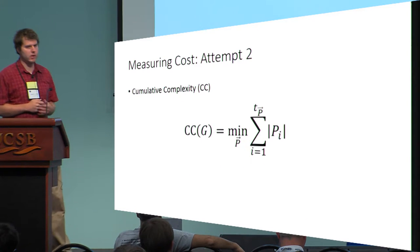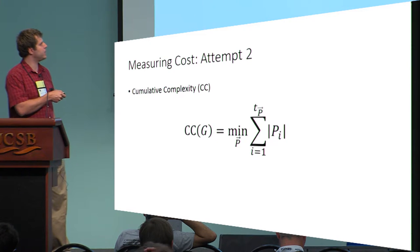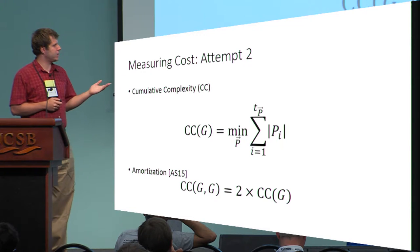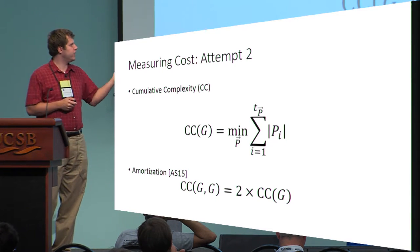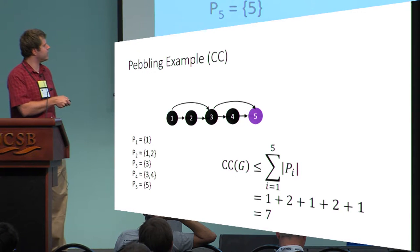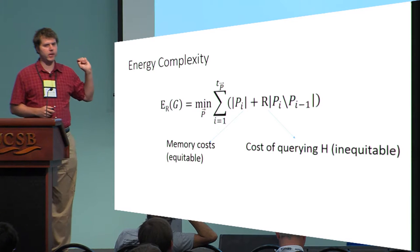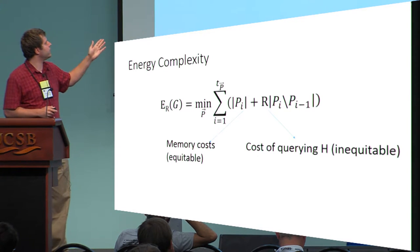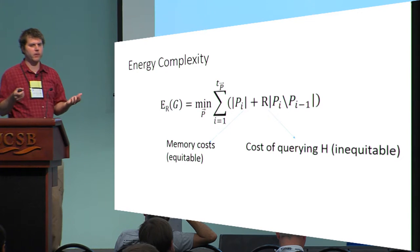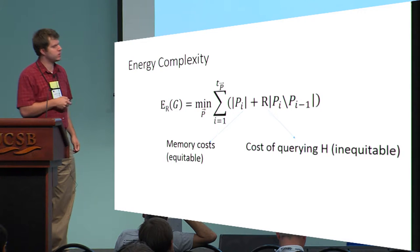Here's an improved cost metric called cumulative complexity. Instead of looking at time times the maximum space usage, you just sum space usage over every pebbling time step. The nice thing about this metric is it actually does amortize — the cost of pebbling two independent instances of a graph is exactly twice the cost of pebbling one instance. In our previous example, the cost of this pebbling is seven because we just sum the number of pebbles on the graph at each point in time. The metric we use in this work is actually a little more refined: it's called energy complexity, which is very similar to cumulative complexity except we add an additional term to model the cost of querying H. Every time we query this function it costs extra energy, and we'll charge a cost R per query.